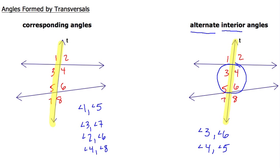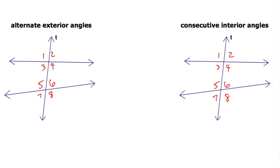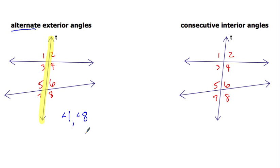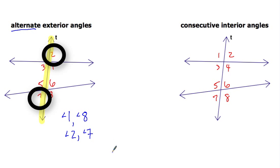Next we're going to look at the other two types of angles formed by transversals: alternate exterior angles and consecutive interior angles. Similar to alternate interior, alternate exterior means alternating — so on different sides of the transversal T. One pair is angle one paired with angle eight, since they're on opposite sides of transversal T. My other pair is angle two paired with angle seven. So those are my two pairs of alternate exterior angles.